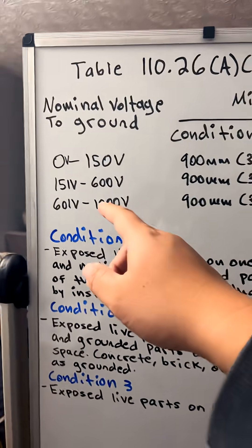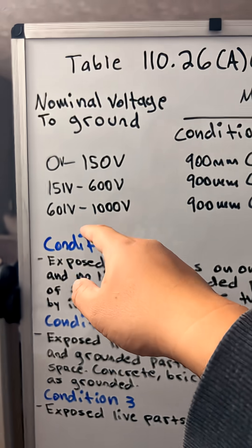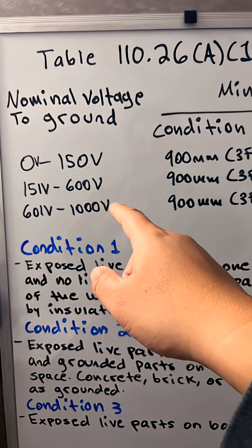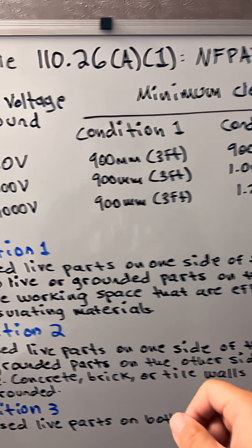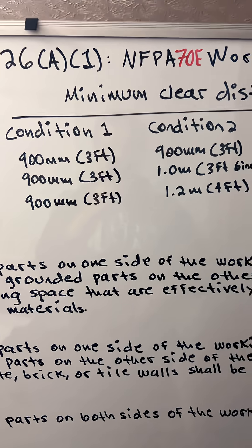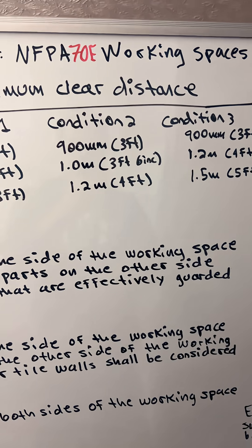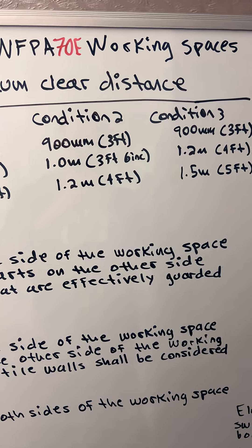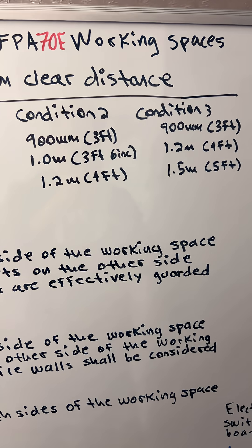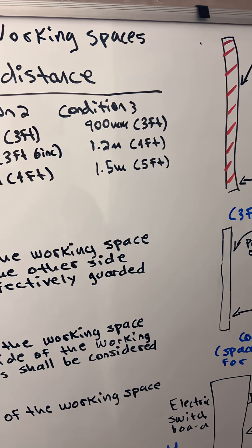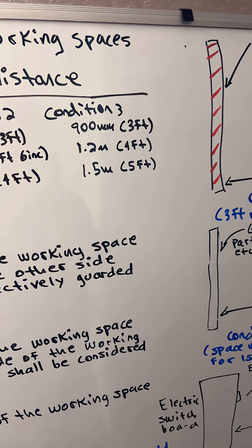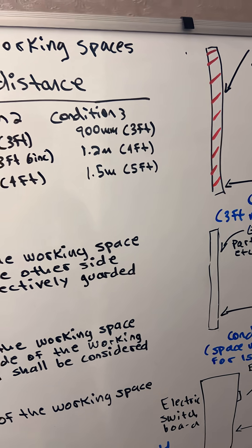From 151 volts to 600 volts: condition 1 is 3 feet, condition 2 is 1 meter or 3 feet 6 inches, and condition 3 is 1.2 meters or 4 feet.